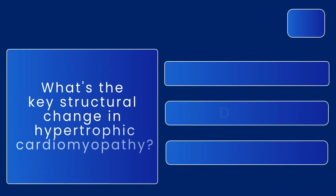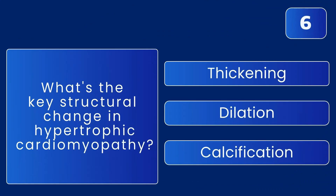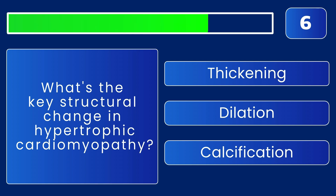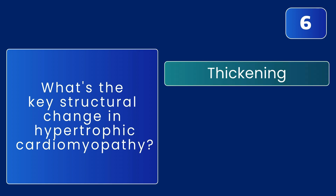What's the key structural change in hypertrophic cardiomyopathy? The answer is thickening — the left ventricle becomes abnormally thick.